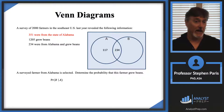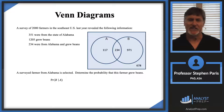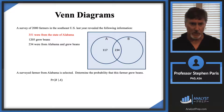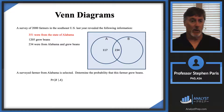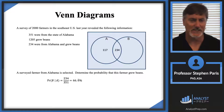So given A, we're talking about 351 farmers from Alabama. Let me back it up for just a second. We're asked to calculate the probability of B given A. Since it's given A, I can ignore everything outside of A. So I take out those farmers that are not from Alabama — I've got the 351 there. And now I want to know what's the probability that one of those farmers grew beans? That would be 234 out of 351, or 66.6%, two thirds.